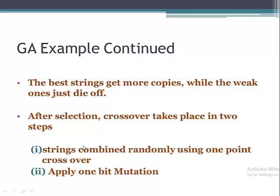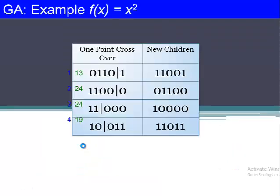The chromosome with fitness value 64 (x=8) is dropped as it has the minimum fitness value. After selection, crossover takes place. We perform crossover using one-point crossover: we select a single point in both parent chromosomes and swap their tails. For example, performing crossover on 13 and 24 produces two new children after swapping at the selected point.